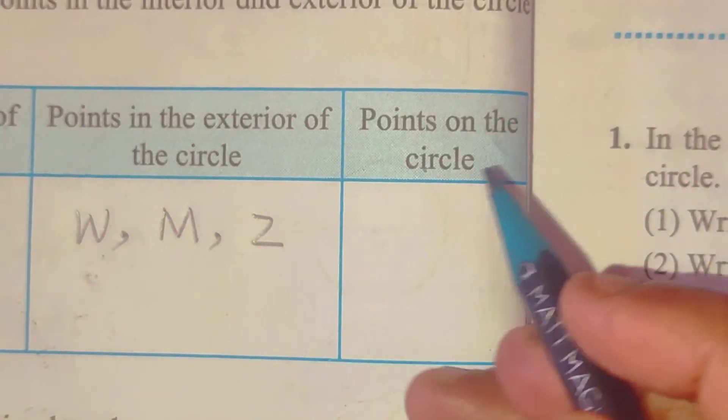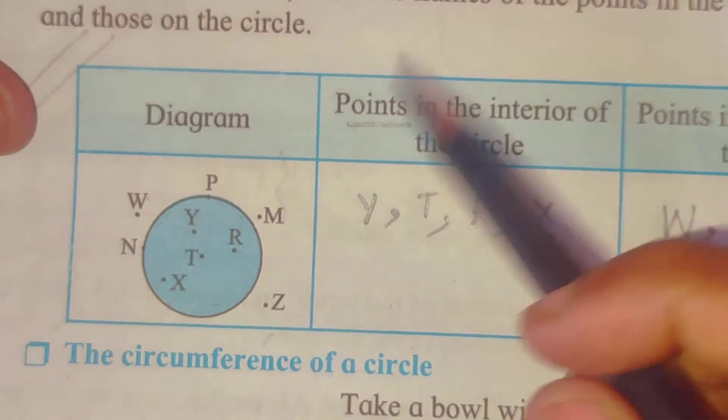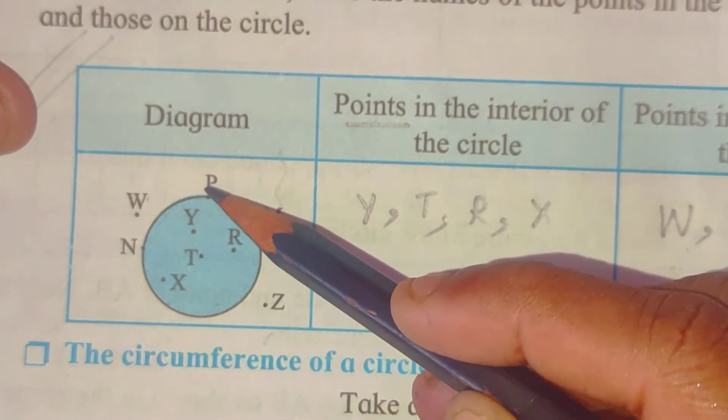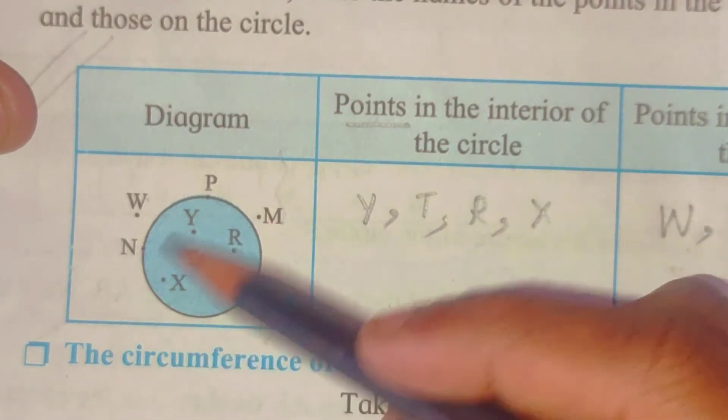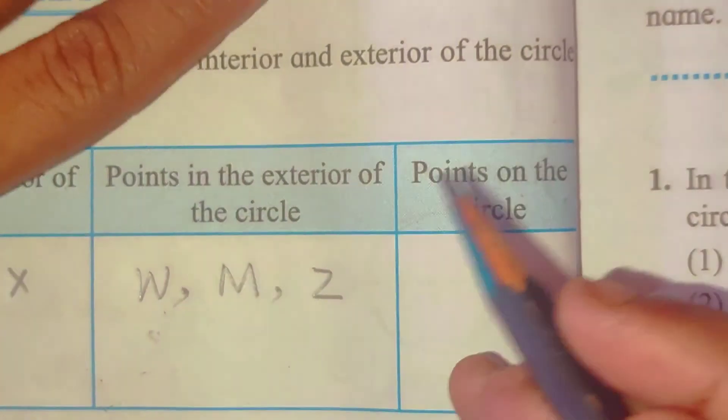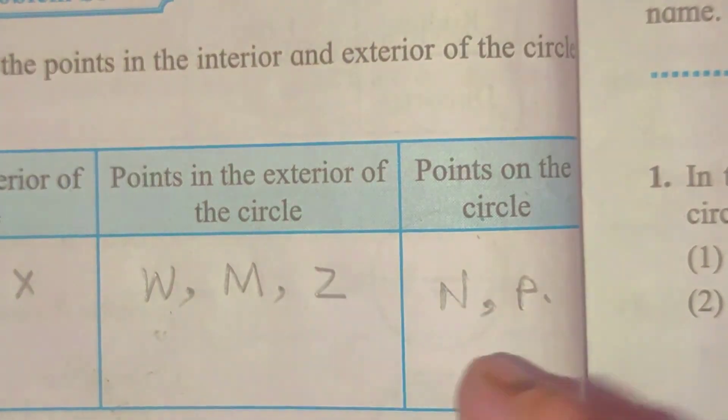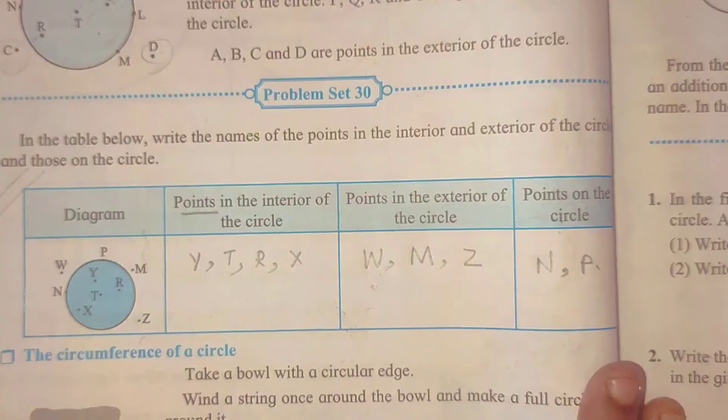Right? Points on the circle. So, on the border of the circle. So, n and p, only two points are there, n and p. So, n, p.